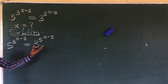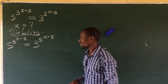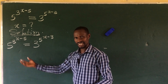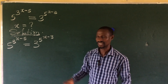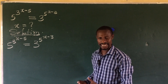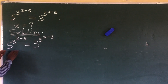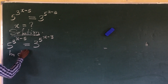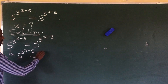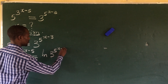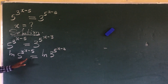Some mathematicians have argued that introducing logarithm at the first step is not ideal, but I see nothing wrong with it. So we're going to apply logarithm — specifically ln base e. We could use log base 10, but let's use ln base e. So we have ln of 5 to the power of 3, raised to x minus 5, equal to ln of 3 to the power of 5, raised to x minus 3.